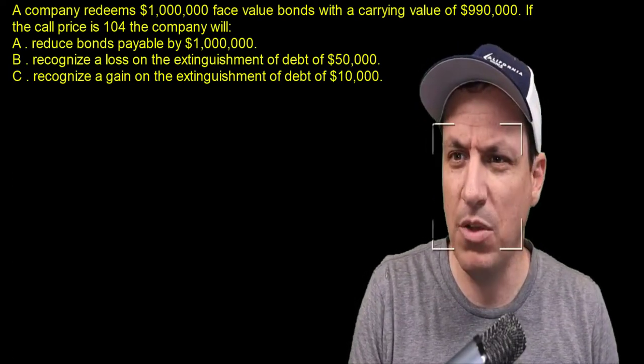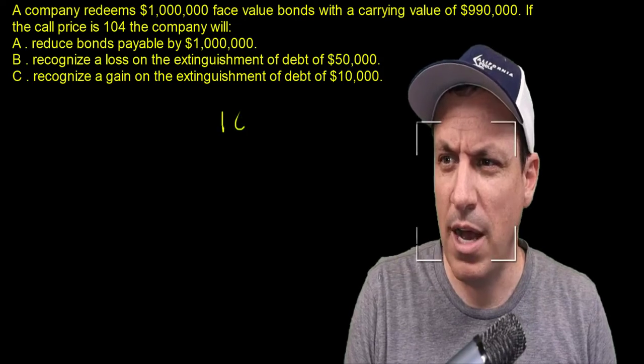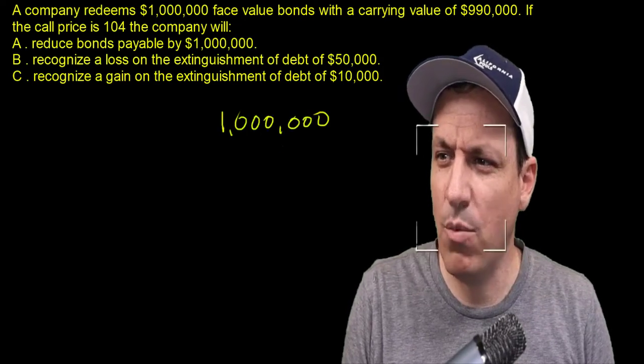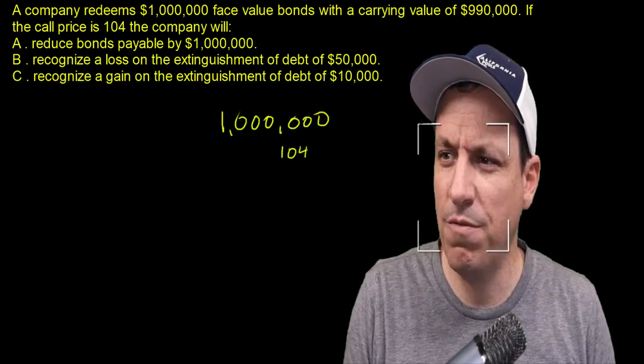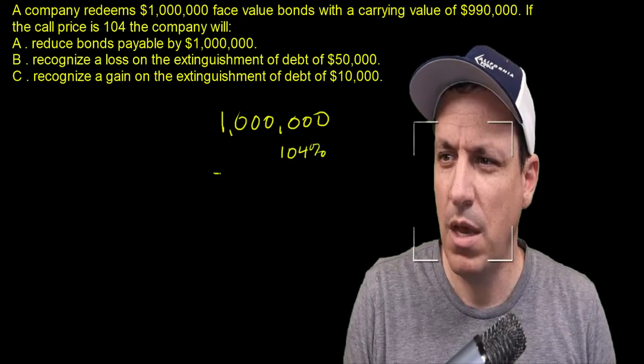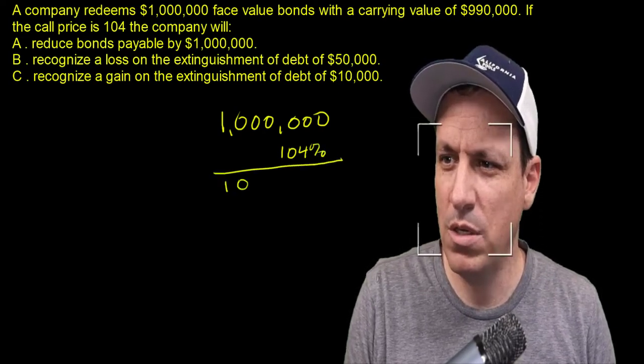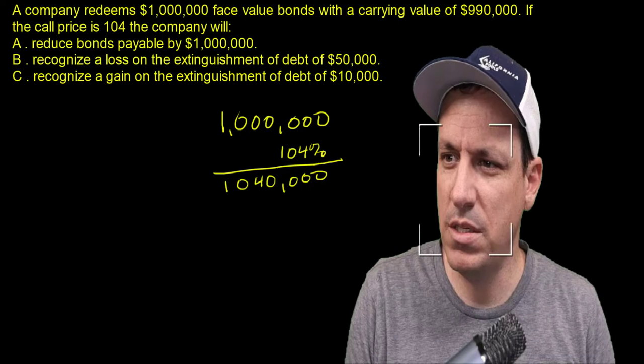So the way we do this calculation is we say okay, so it has a million dollars outstanding, right, and we're going to take that, multiply by 104, and what we get when we do that - 1,040 - this is the answer that we get when we multiply these two.